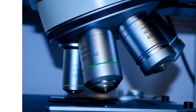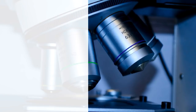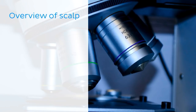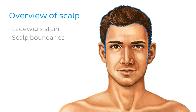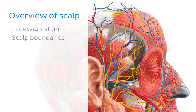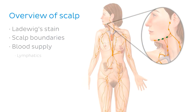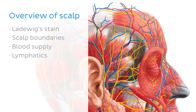Let's begin by talking about the scalp. In this section we'll take a look at the type of stain used on the histological sections we'll see in this tutorial — that is Laidwig's stain — the boundaries of the scalp, the blood supply including arteries and veins, as well as the lymphatics and innervation of the scalp.